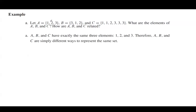Set A includes one, two, three, and set B has a different order. So we are allowed to change the order of elements in the set. Note that in set C you have repetition of one. We can ignore the repeated element — one is the representative of element one. Three is repeated three times, but you can ignore the repetition. So set C has one, two, and three members.